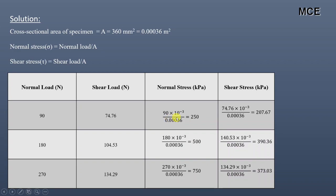So 90 N gives 250 kPa, 180 Newton of normal load becomes 500 kilopascal normal stress, and 270 Newton of normal load becomes 750 kilopascal of normal stress. Similarly, shear load can also be converted into shear stress by dividing the shear load by the cross-sectional area.